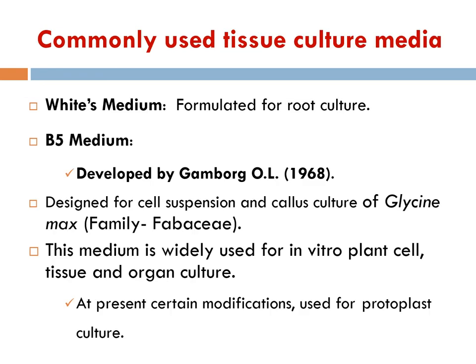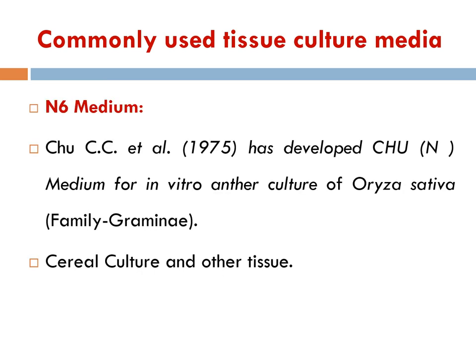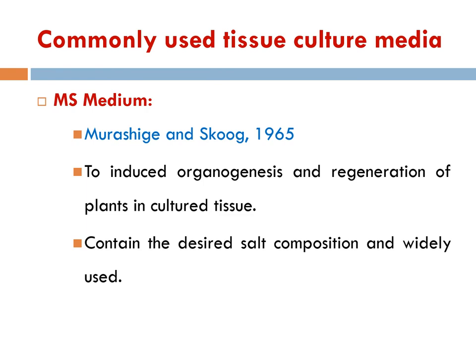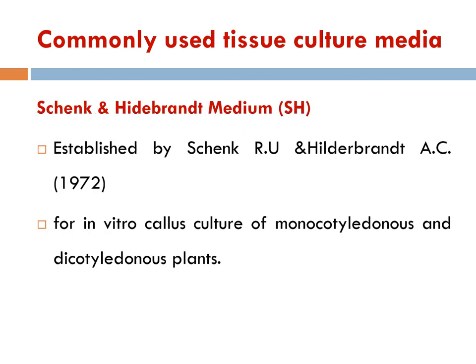At pH higher than 7 and lower than 4.5, plants stop growing in culture. Commercially used tissue culture media include White's medium, formulated for root culture; B5 medium, developed by Gamborg for cell suspension culture and callus culture; N6 medium, developed by Chu et al., used for in vitro anther culture of Oryza sativa; and MS medium, the most popular medium, developed by Murashige and Skoog in 1965 to induce organogenesis and regeneration of plants in cultured tissues. Knop's and Hildebrandt medium is used for in vitro callus culture of monocotyledons and dicotyledonous plants.